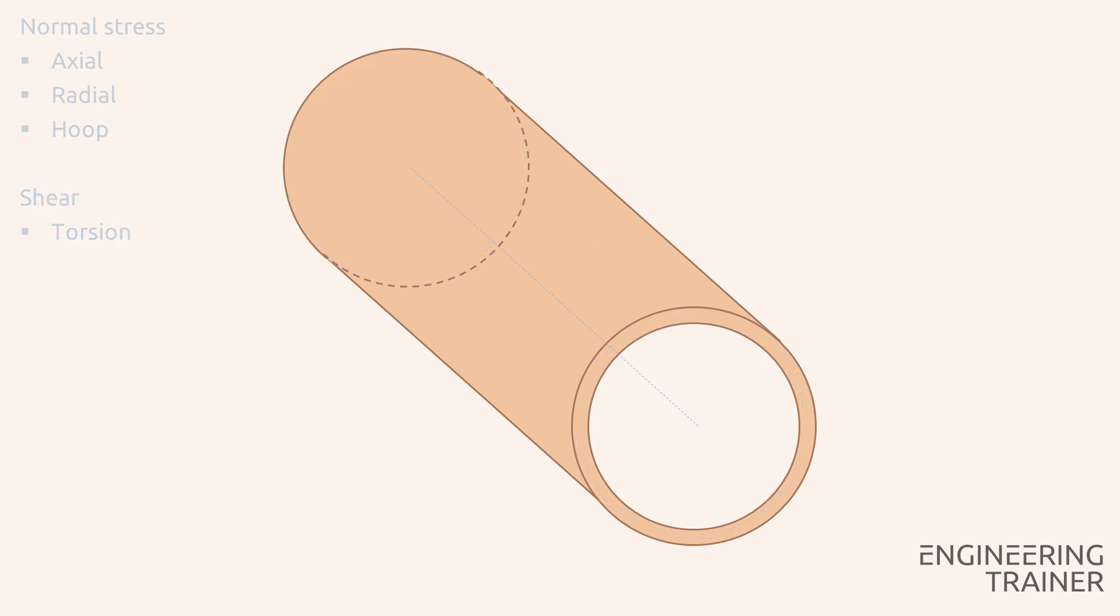Now, it is important to note that the radial stress is often neglected in thin wall piping. As long as the inner diameter and the outer diameter are roughly the same, or in other words, their ratio is close to 1, a pipe is considered to be a thin wall pipe, and radial stresses are often neglected. We end up with three main stresses in a piece of piping: the axial, hoop and torsion stress.